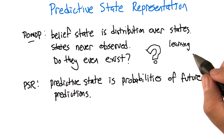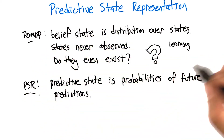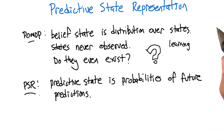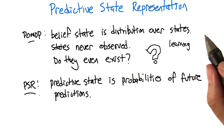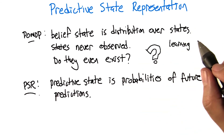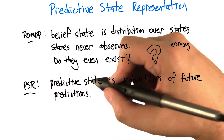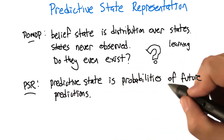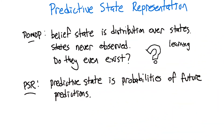So the idea of a predictive state representation, or PSR, is that the thing we're going to use for representation isn't going to be probability distributions over these possibly fictional states. Instead, they're going to be probabilities of the outcomes of future predictions. Like, I am in a state where there's about an 80% chance it's going to rain tomorrow — which doesn't require an actual state. That was maybe not a great example, so let me give a more concrete example to ground this idea out.